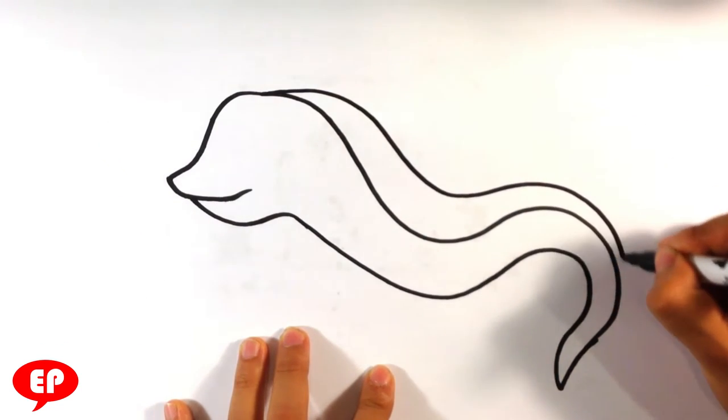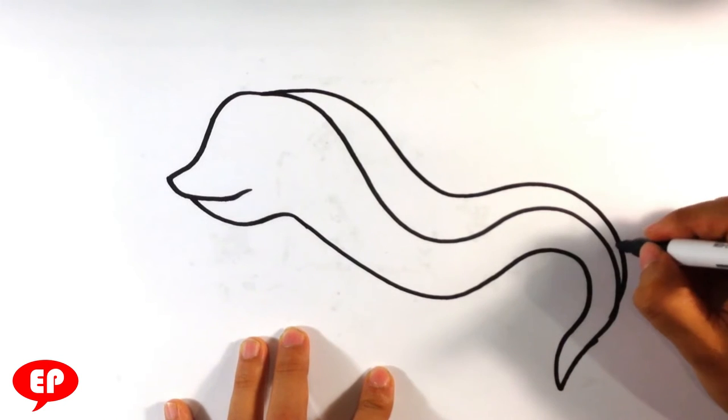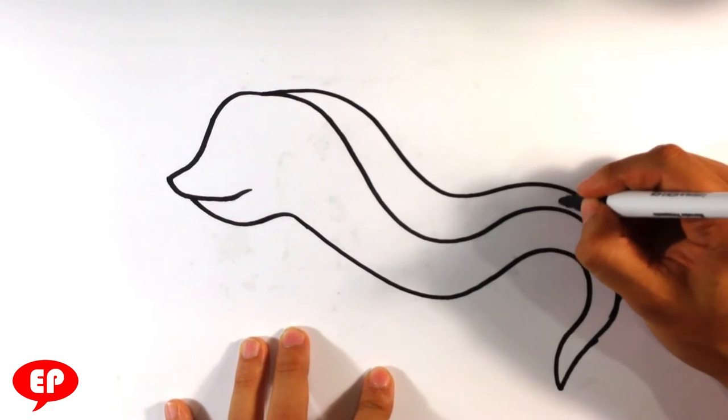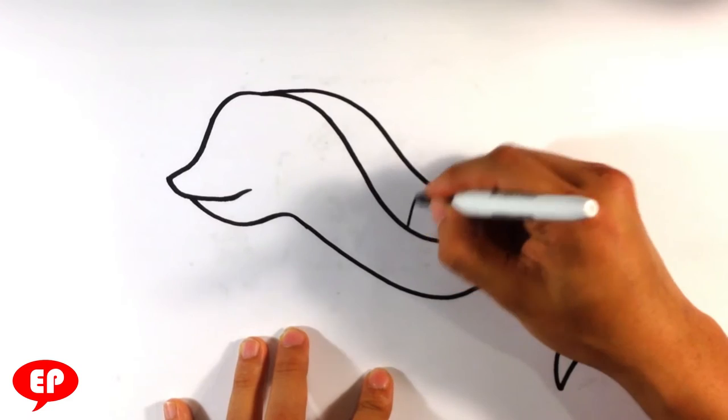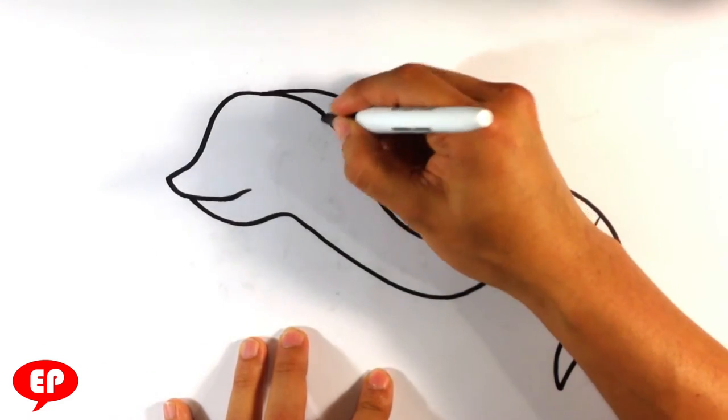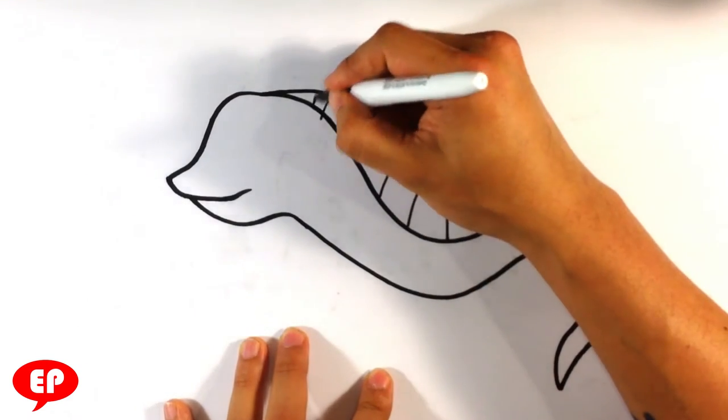And then you're going to draw a ridge on top of it. That ridge is going to come out with lines, you know, ridges all through it a little bit.